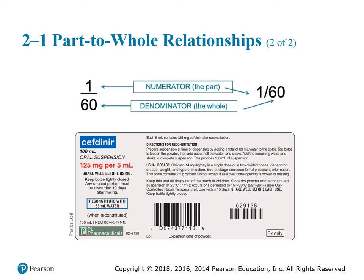Fractions are important to understand because you will come across many of them in the healthcare occupation. Fractions appear in medication doses, measurements, sizes of instruments, work assignments, and time units. Reading fractions on drug labels is a workplace necessity. Notice the 125 milligrams per 5 mLs on this label — this translates to 125 mg per mL as a fraction.